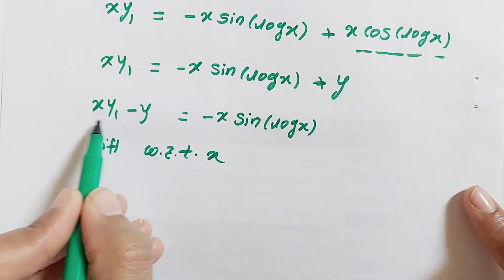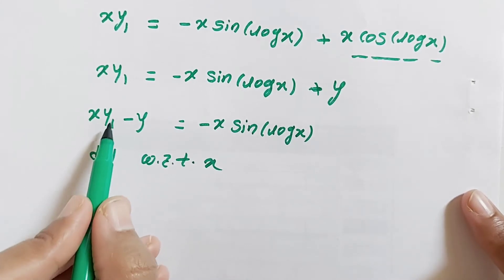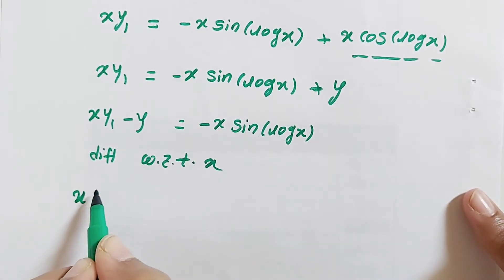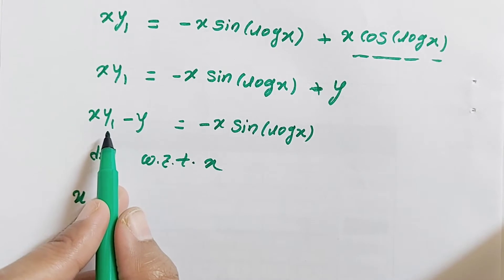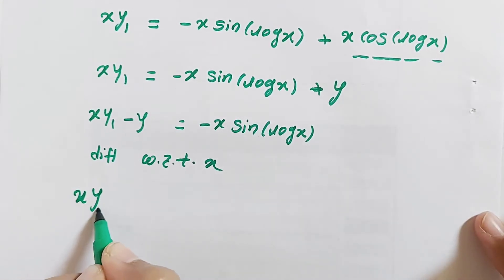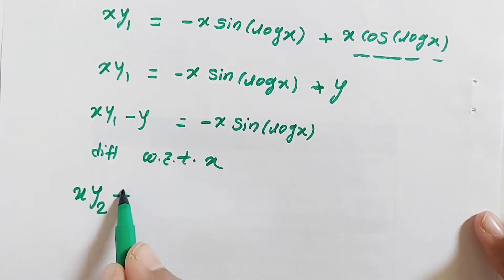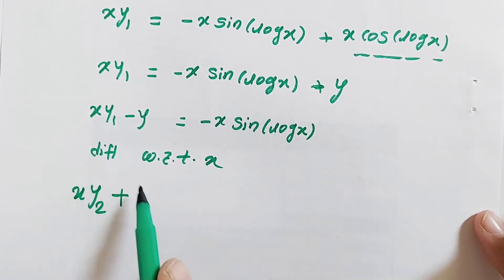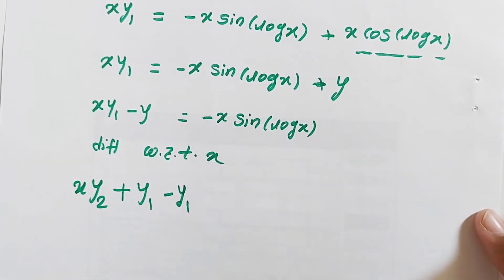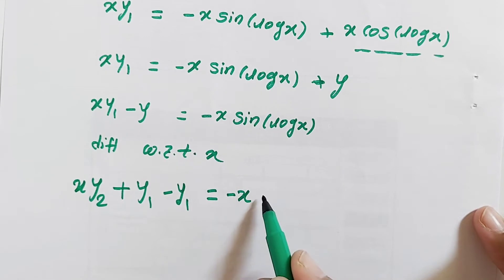We use the product rule on the left side since y is a function of x. For x·y₁: first term x as it is, times the derivative of y₁ which is y₂ (the second derivative), plus the derivative of x which is 1 times y₁. Then minus the derivative of y which is y₁. On the right side, again apply the product rule: minus x as it is, times the derivative of sin(log x) which is cos(log x)·(1/x).